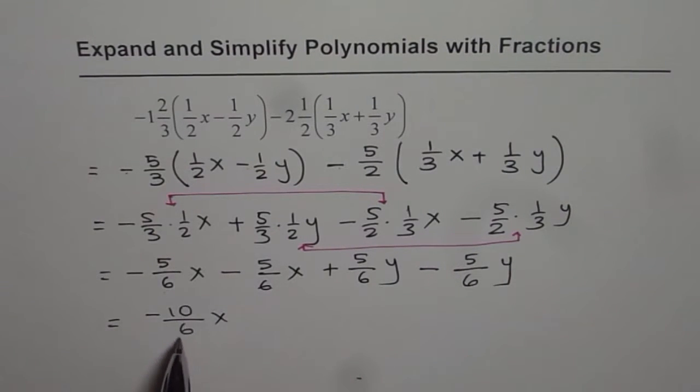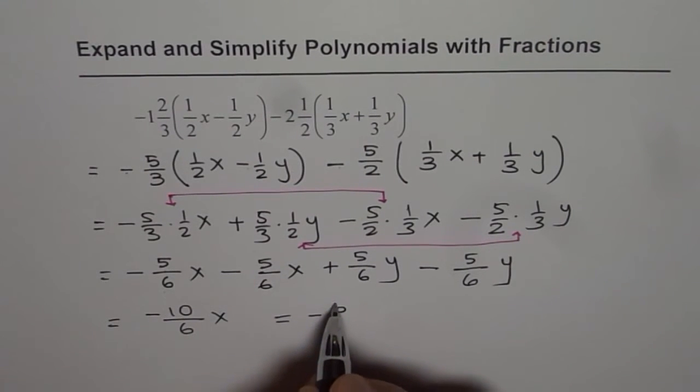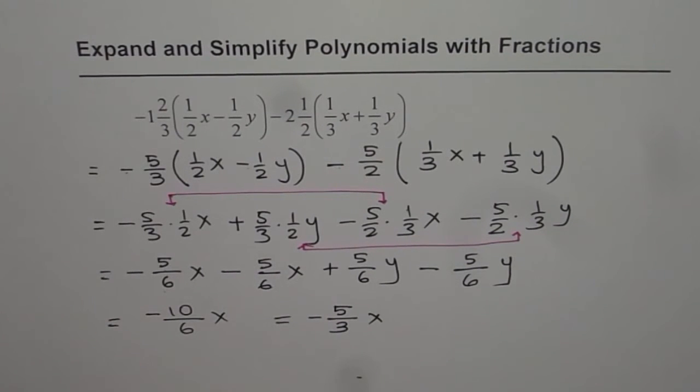So we are left with minus 10/6x. Now 10 and 6 have a common factor of 2. So it can be simplified and written as minus 5/3x, dividing both by 2.